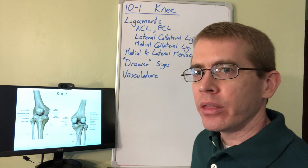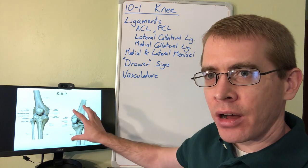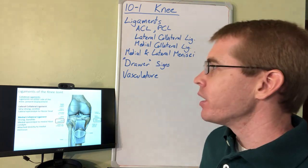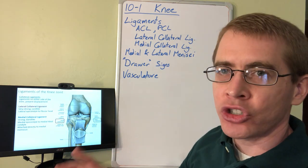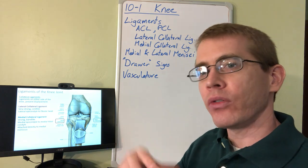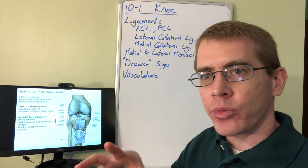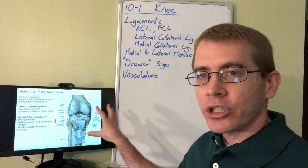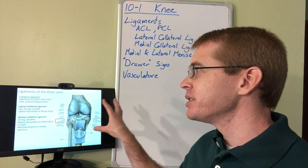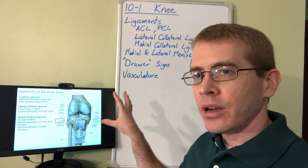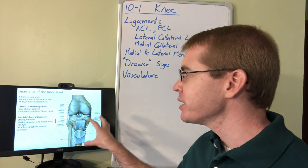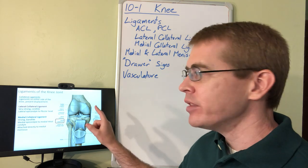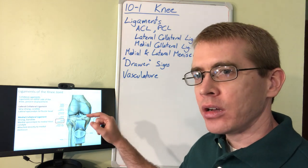We've already discussed the osteology of the knee, so no need to belabor that — please review. Moving on to the ligaments of the knee joint. Just like every other synovial joint in the body, there is a set of collateral ligaments that help stabilize the joint. These collateral ligaments are on either side of the knee: the medial and lateral ligaments.